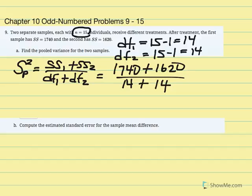In our calculators, 1740 plus 1620 divided by 14 plus 14, which is 28, gives us 120. So the pooled variance is equal to 120.